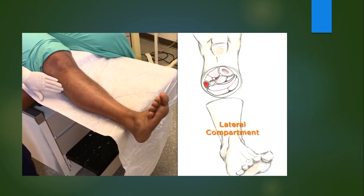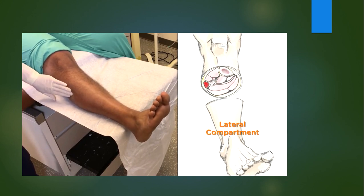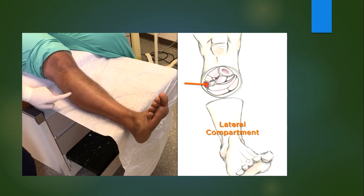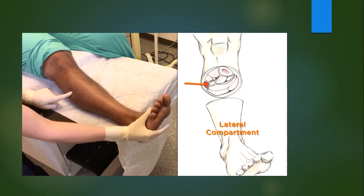For the lateral compartment, palpate the posterior border of the fibula and insert the needle just anterior to this, aiming right towards the fibula. Go about one centimeter deep and the pressure should rise with inversion of the foot.